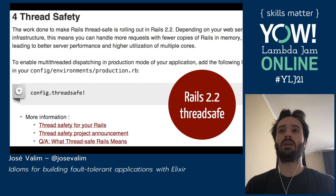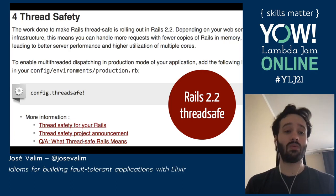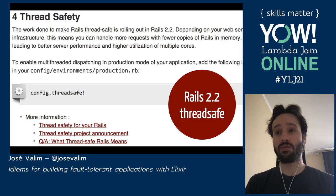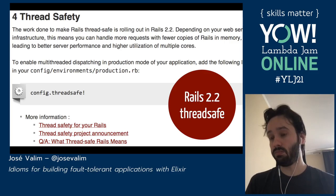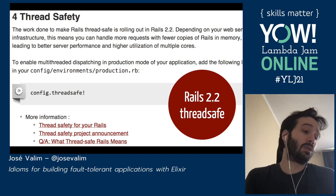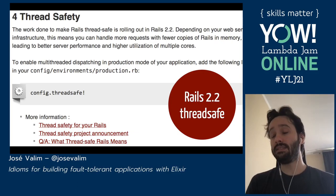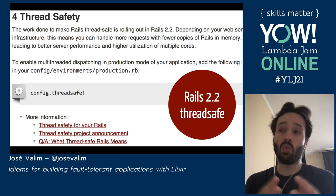Back in 2008, there was a new Rails release where they said that Rails 2.2 is thread safe. What does it mean to be thread safe? At the time, we were starting to have machines with more cores — two cores, four cores — and people wanted to run Rails in production on machines with multiple cores. The idea behind thread safety is that if you have multiple cores, the way you use all those cores is by using threads, and being thread safe means you can do that and everything is going to work — nothing is going to blow up.